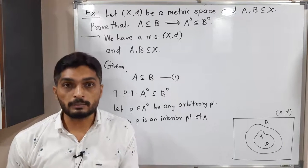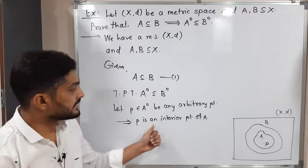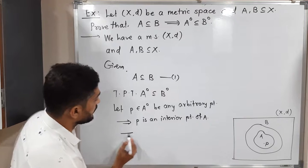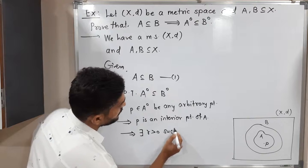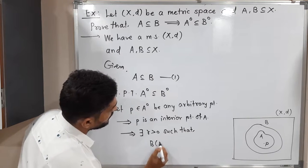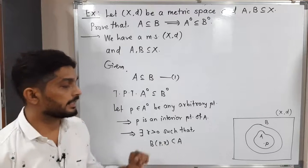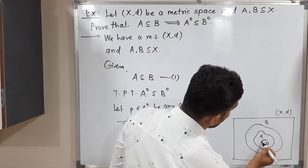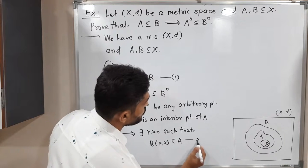Since A° is nothing but the collection of all interior points of A, by definition of interior point, there exists r > 0 such that B(P,r) ⊆ A. Since P is an interior point of A, it is possible to find a ball around P which is a subset of A. Let me call it as (2).